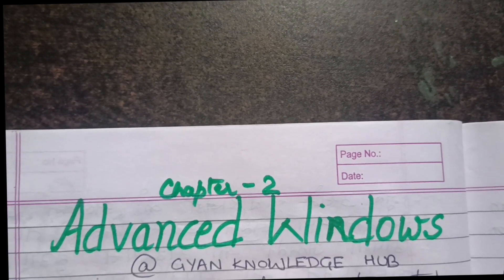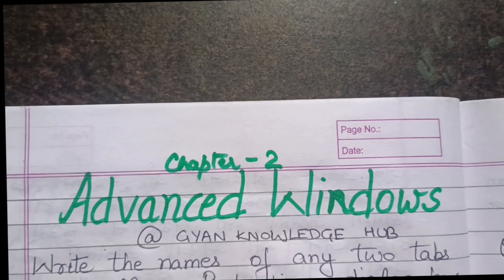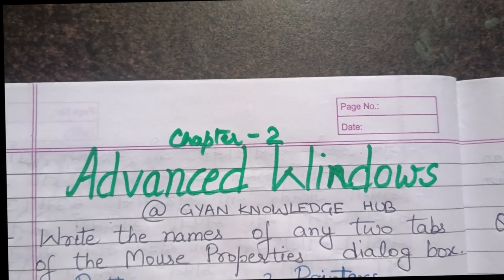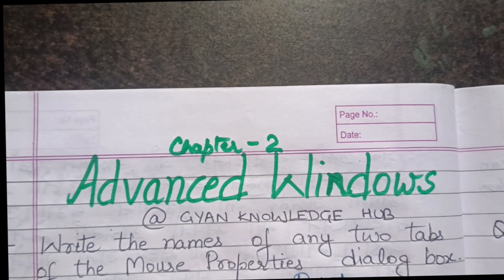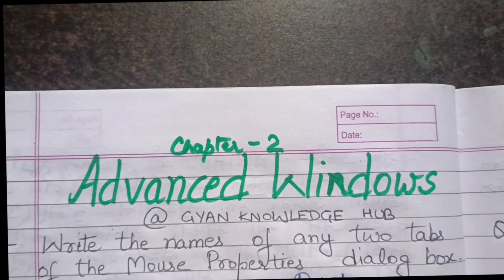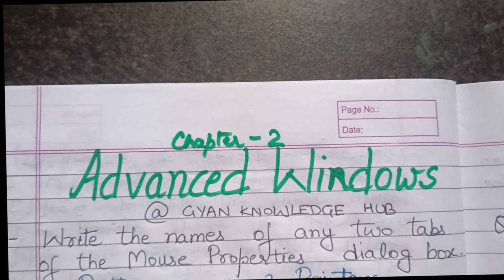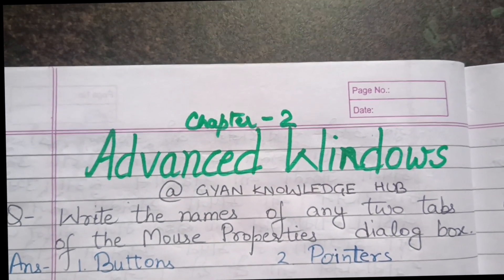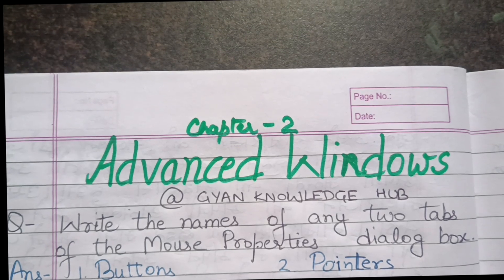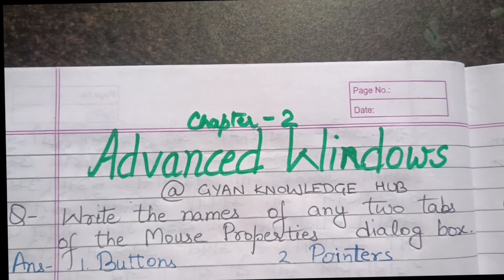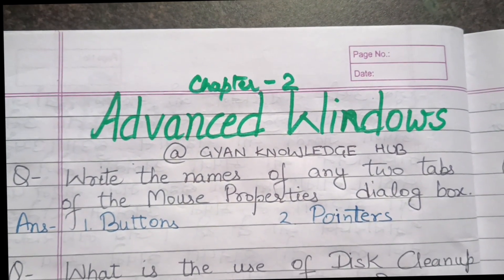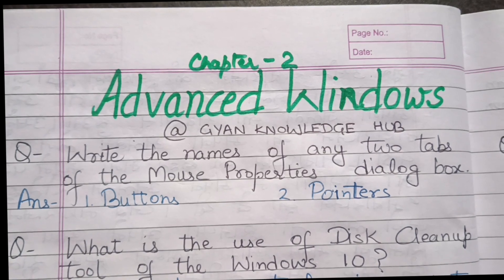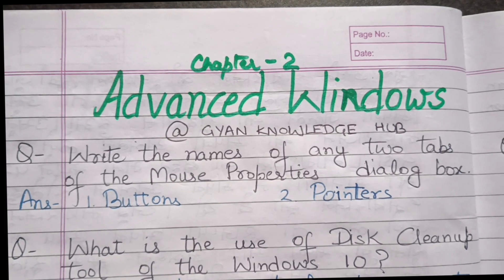Question one: Write the names of any two tabs of the Mouse Properties dialog box. The answer is: Buttons and Pointers.